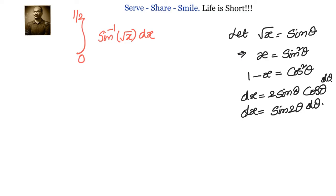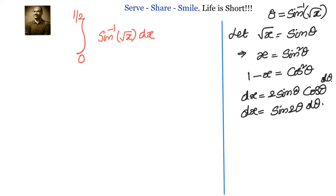Now that we have dx = 2sinθ cosθ dθ, we go back to the problem and substitute. Since θ = sin⁻¹(√x), instead of sin⁻¹(√x) we write θ, and instead of dx we write 2sinθ cosθ dθ. So our indefinite integral becomes ∫ sin⁻¹(√x) dx = ∫ θ · 2sinθ cosθ dθ.